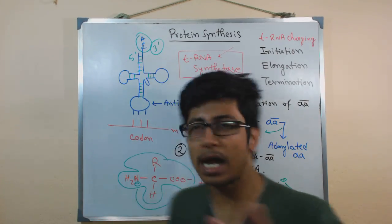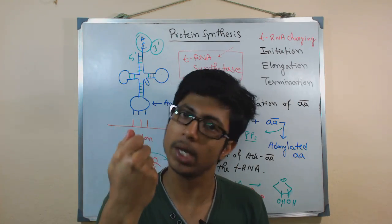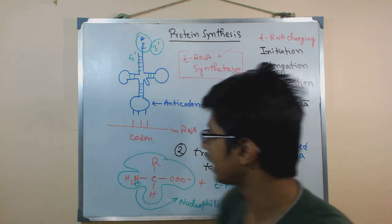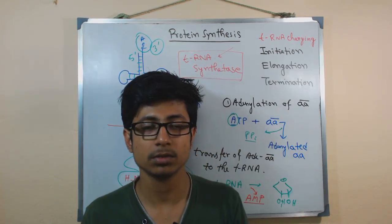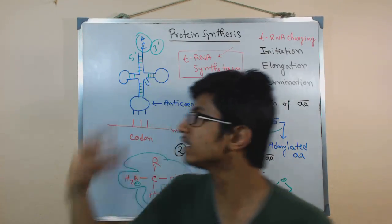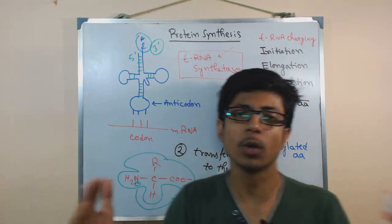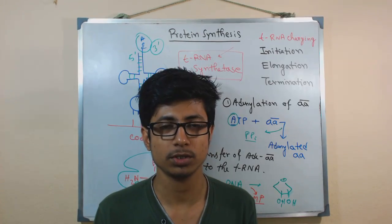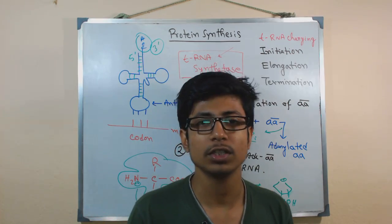Once we know how the tRNA is charged, here is the overview: the tRNA is carrying the amino acid of its interest, it has the anticodon loop, and we have the mRNA with codons. What we need to do is scan for codons, bring the right amino acid using the transfer RNA, join them together, and produce peptide bonds. Now let us look at the initiation stage of this process.